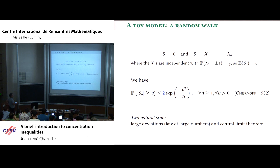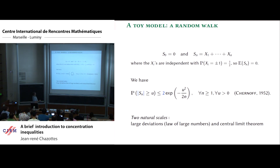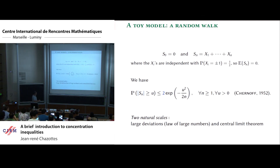You start at zero on Z, adding pluses and minuses with equal probability. The position of your random walker is centered on average. The x_i are independent, and there is a famous inequality by Chernoff proved in the last century: if you look at the distance after n steps, the probability that this distance is larger than some u is less than exponential of minus u squared divided by n. This is valid for any n and any strictly positive u.